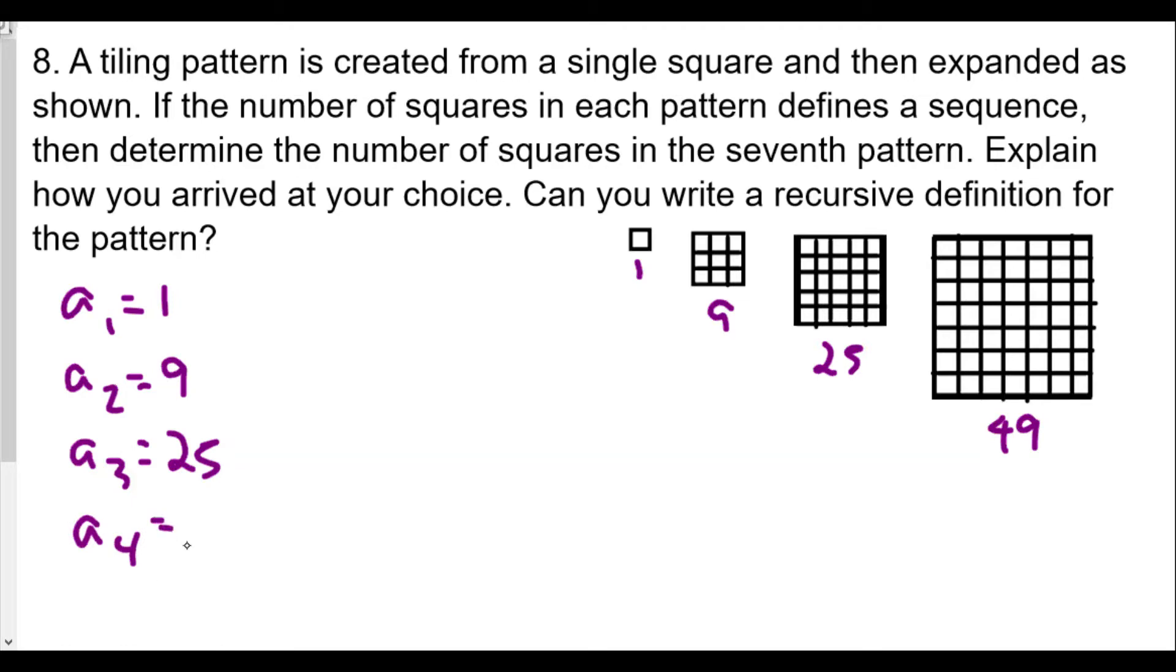So the fourth term is 49. Now you might recognize in this case that these are perfect squares: one, nine, twenty five, forty nine, but they're kind of skipping the even number of perfect squares like there's no two squared, four squared, six squared. So we're going for one squared, three squared, five squared. So really this is going to be one squared, three squared, five squared. This would be seven squared.